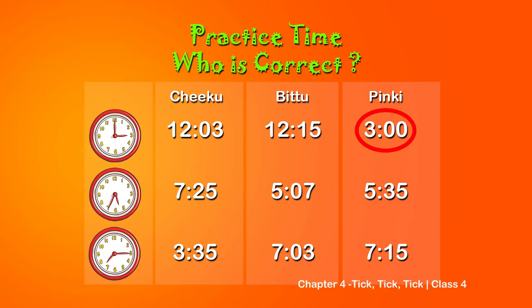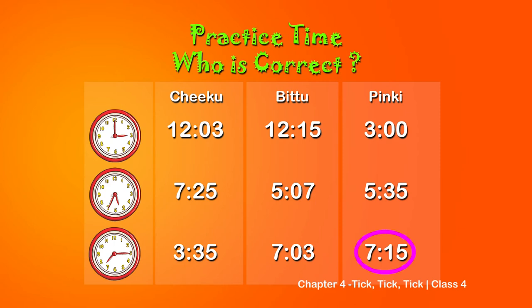Could you read the time? Yes, because the minute hand is at twelve and the hour hand is at three. In the second one, the hour hand is in between five and six, and the minute hand is at seven, which means thirty-five minutes past five, or five thirty-five. In the third one, the hour hand is in between seven and eight and the minute hand is at three, which means fifteen minutes after seven, or seven fifteen.